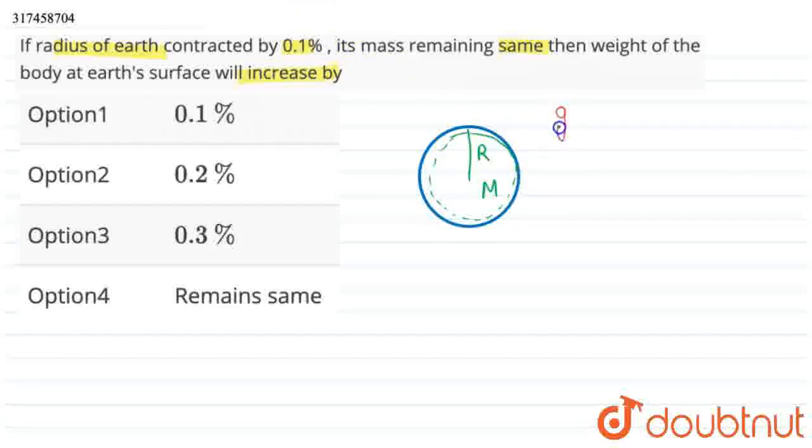Formula - acceleration due to gravity of any planet, g is equal to GM by r².